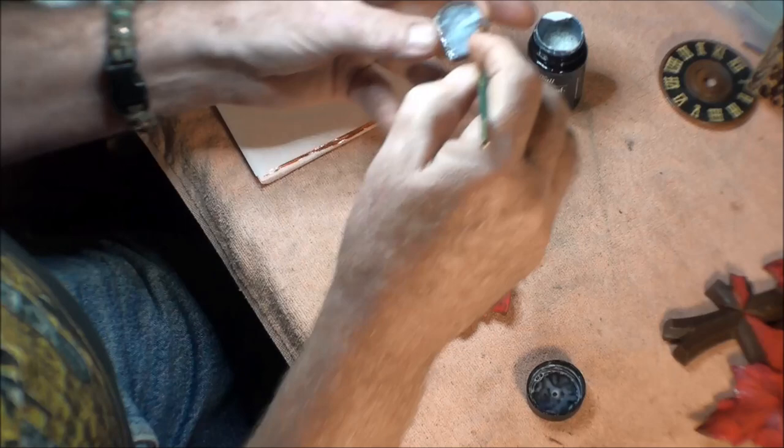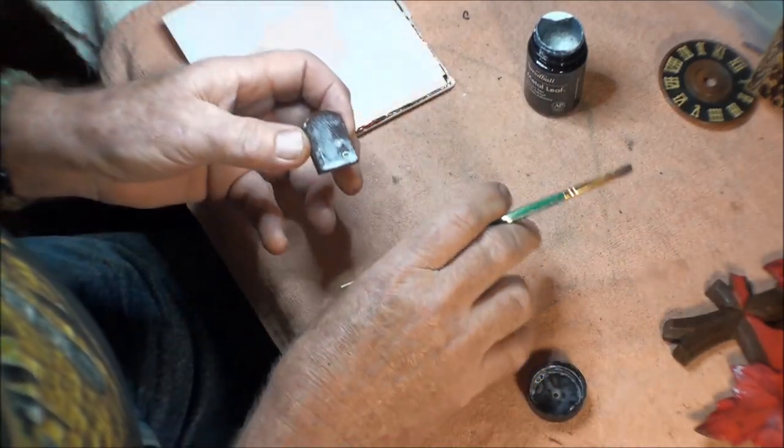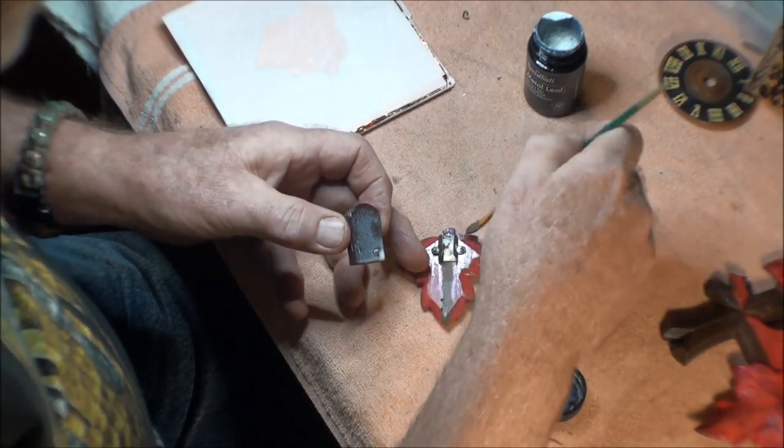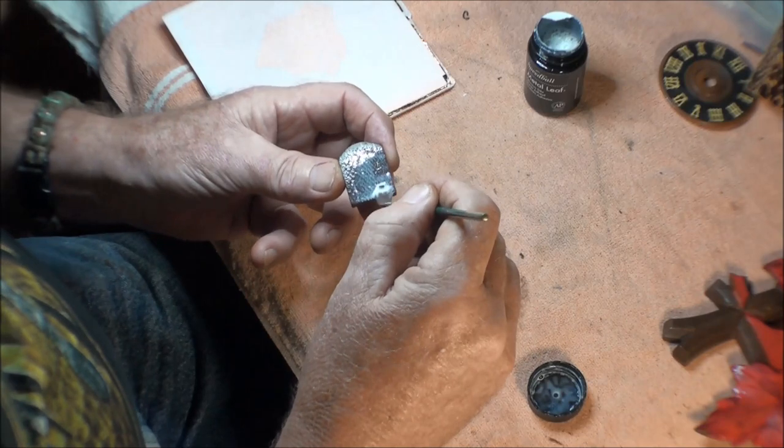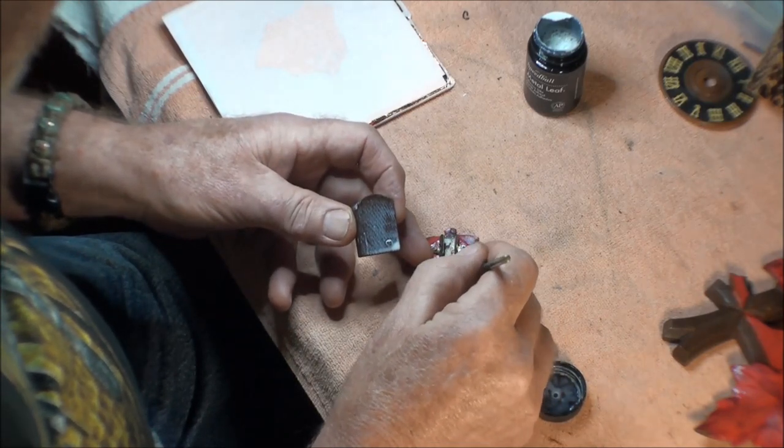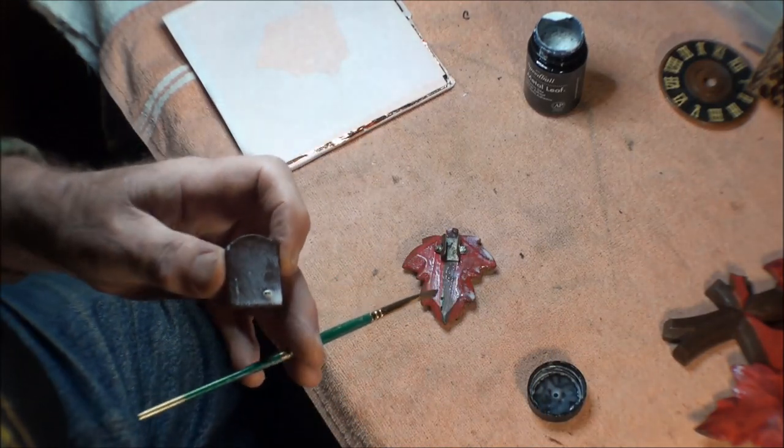So the door I'm going to do both sides so it looks nice, and it does open up too. This here you just paint it on here and wait for it to turn clear, and then you can do the leafing on it.